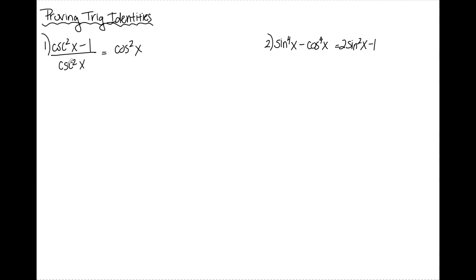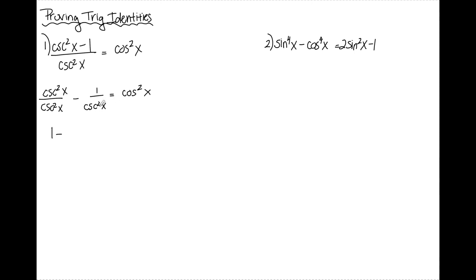Since I only have one term in this denominator, I can divide that into each term in the numerator. So I'm going to write this as cosecant squared x over cosecant squared x minus 1 over cosecant squared x. Cosecant squared divided by cosecant squared is 1, and 1 over cosecant squared is actually sine squared.